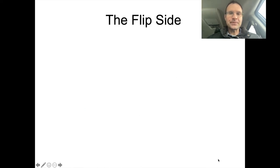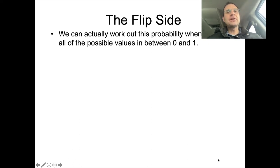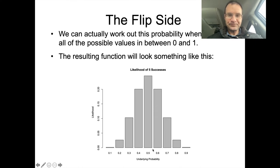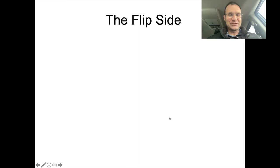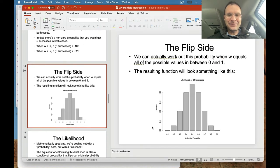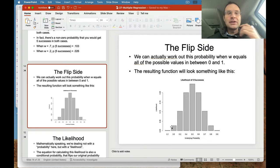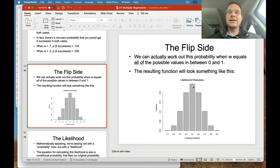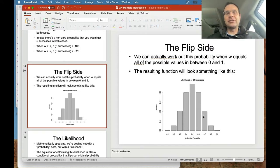You can work out the probability of getting five successes when W equals all the possible values between 0 and 1. When you do that, you get a function that shows the likelihood of getting five successes across all underlying probabilities. When W is 0.7, the likelihood of five successes is 0.103; when W is 0.2, it's 0.026. But you get higher likelihoods in the middle — the most common situation where you'd expect five successes is when the underlying probability is 0.5.